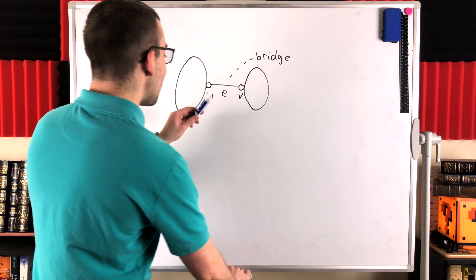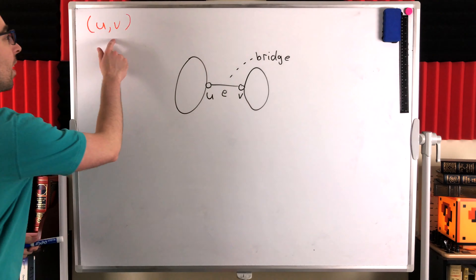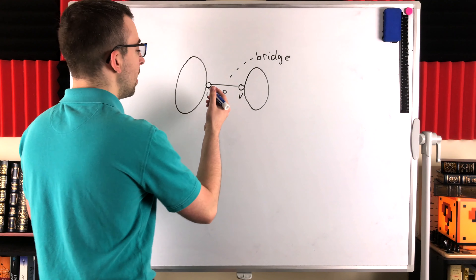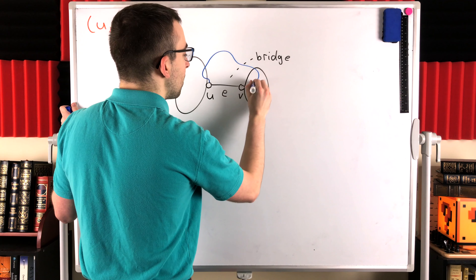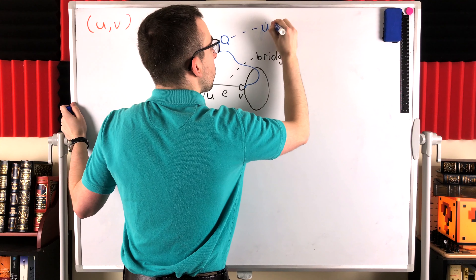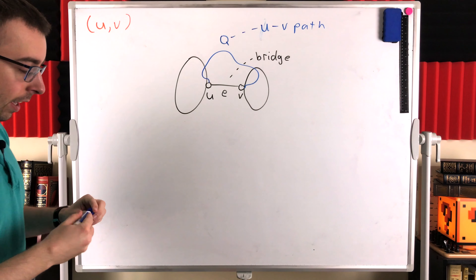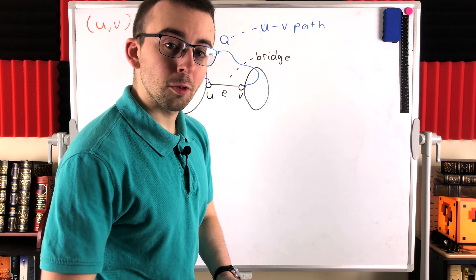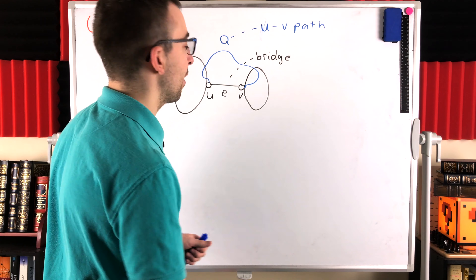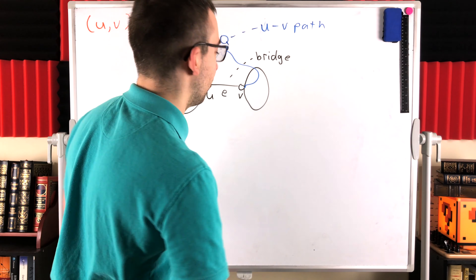A pretty clear approach is proof by contradiction. Suppose for the sake of contradiction that the bridge is not the unique UV path — suppose there is some other UV path, which we'll call Q. We're going to show this is a contradiction, because if there is some other UV path, then deleting our bridge E doesn't disconnect the graph, which contradicts the definition of bridge.